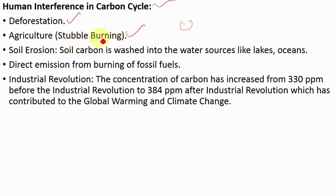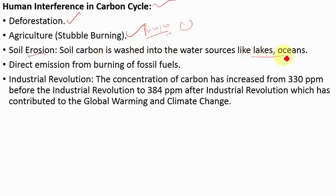In agriculture, we do stubble burning — when we don't organically treat leftover crops, we simply burn them. You might have heard in the news about farmers in Punjab and Haryana doing stubble burning. This crop residue has carbon in it, and when we burn it, carbon is released into the atmosphere. Another example is soil erosion — through soil erosion, soil carbon is washed into water sources like lakes and oceans. Also, direct emission from burning of fossil fuels is a major factor. Through industrialization, we continuously use fossil fuels in very large amounts, releasing carbon into the atmosphere in huge quantities.